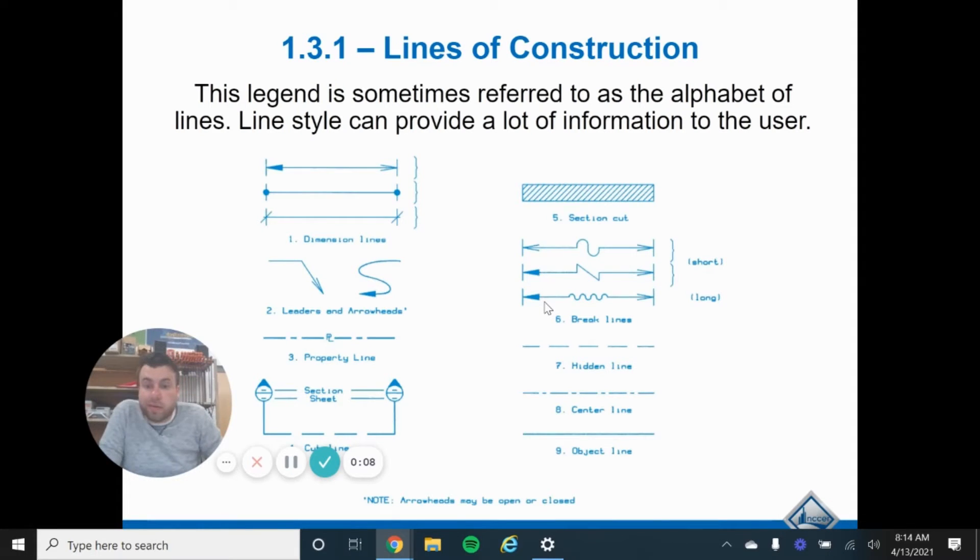We are in NCCR Core, Module 5, and this is going to be Part 2, Section 2. So we've talked about the different types of plans, and now we're going to look at some of the different symbols that are common to see on the plan so you know what they mean.